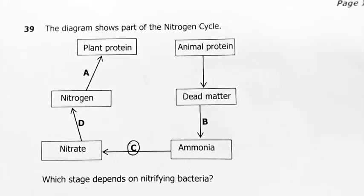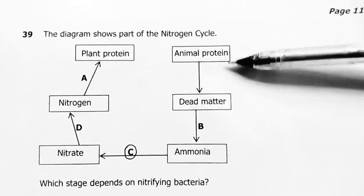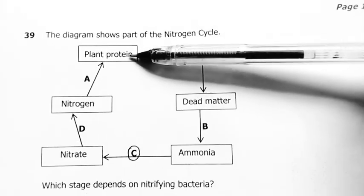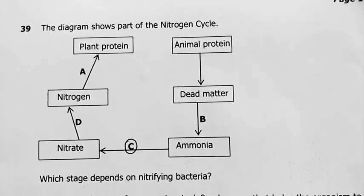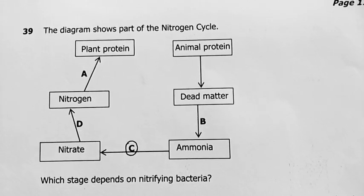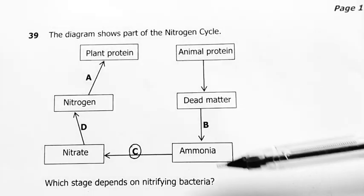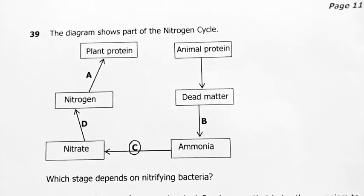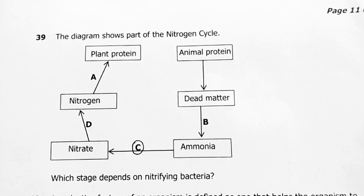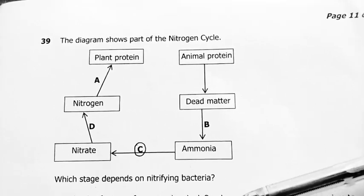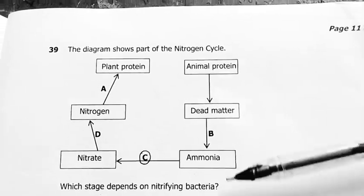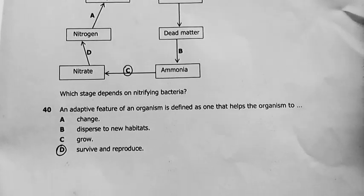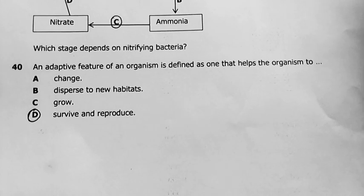Question 39: the diagram shows part of the nitrogen cycle — animal protein, dead matter, ammonia, nitrate, nitrogen, plant protein. Which stage depends on nitrifying bacteria? The bacteria that convert ammonia to nitrates — that's nitrifying bacteria. Denitrifying bacteria are those that break down nitrates to produce nitrogen. So my best answer was C.